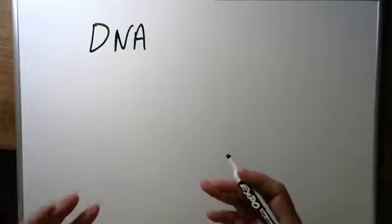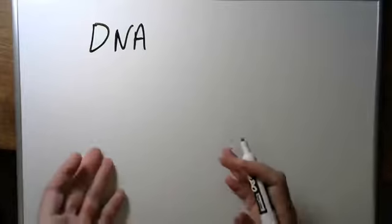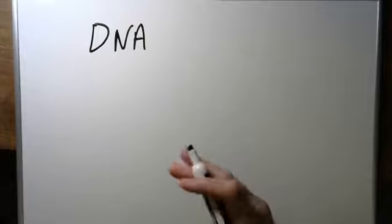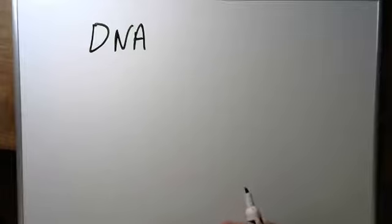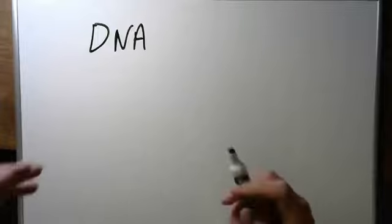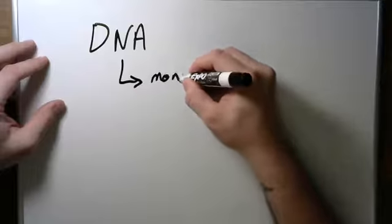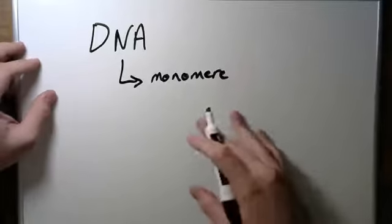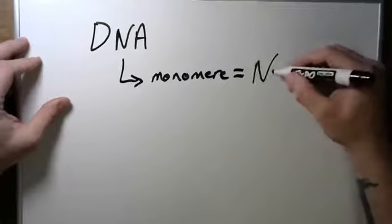Similarly to proteins, which have amino acids as monomers, and carbohydrates, which have glucose as monomers - if you remember those macromolecules we talked about - the monomer for DNA is the nucleotide.